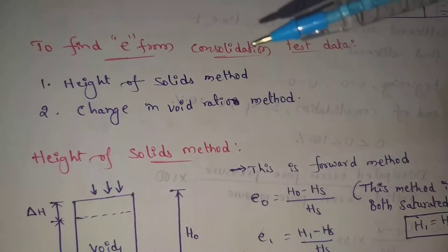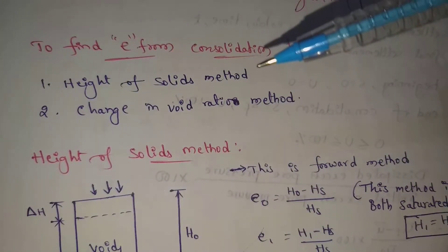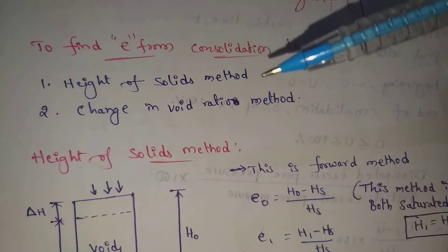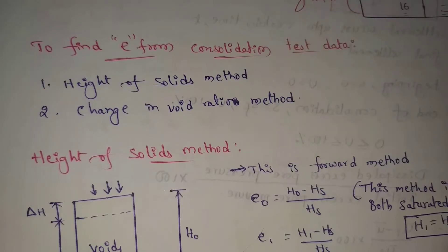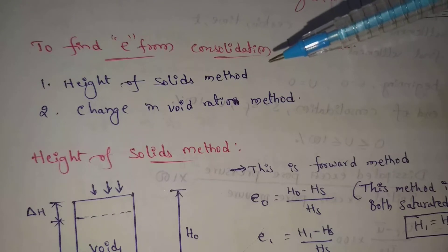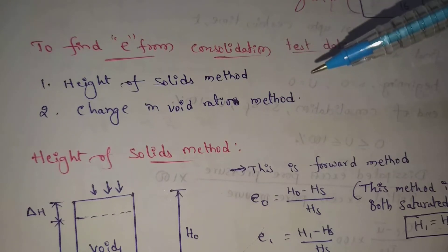Next topic: determination of void ratio at various load increments during consolidation. We will find out the void ratio at these loads. There are two types of methods: the first one is the height of solids method, and the second one is the change in void ratio method.